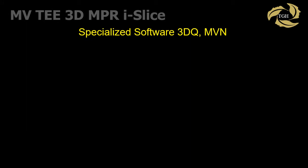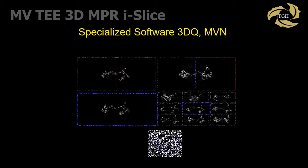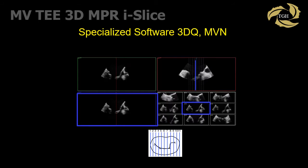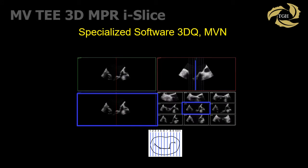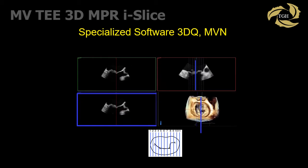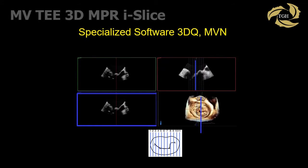Another option using specialized software permits aligning predefined cuts perpendicular through the mitral valve, similar to CT scan cuts. This results in a display of multiple sagittal cuts through the mitral valve, each of which can be examined for pathology. Using iSlice, the ONFAST 3D dataset can be displayed on screen to localize individual segments. Remember, the pathology is identified using these 2D cuts extracted from the 3D dataset.